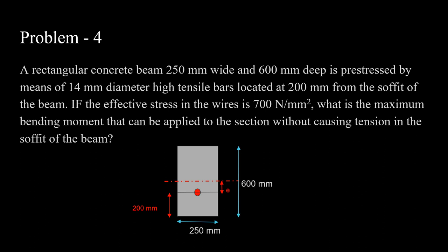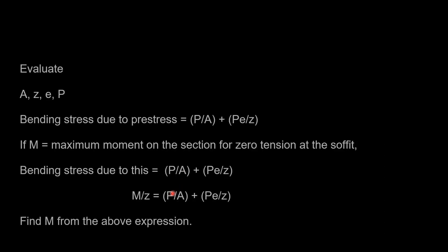One more example: given the position of pre-tensioning wires, a stress of 700 N/mm², and known eccentricity, find the maximum bending moment that can be applied without causing tension in the soffit of the beam. Here, instead of finding the pre-stressing force, the unknown is the bending moment M — the stress due to the moment must be nullified by the pre-stressing stresses. These problems are all variations of the stress concept for analysis of pre-stressed concrete sections.